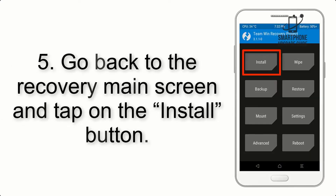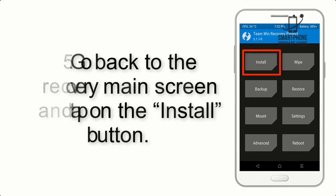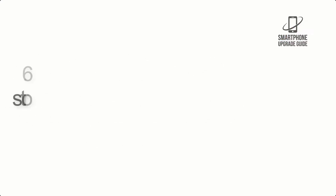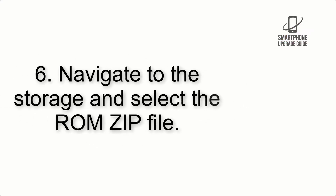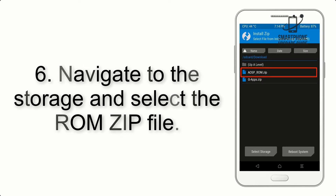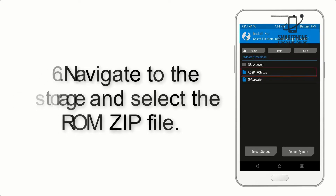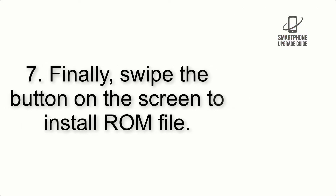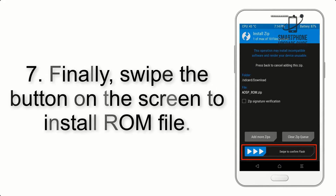Step 4: Swipe the button to wipe the device. Step 5: Go back to the recovery main screen and tap on the Install button. Step 6: Navigate to the storage and select the ROM zip file.